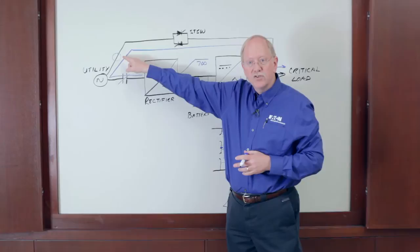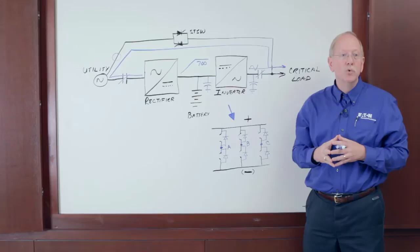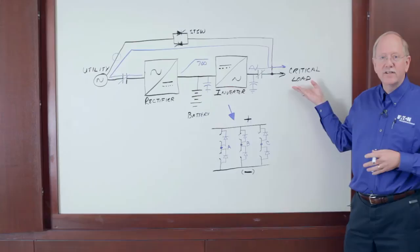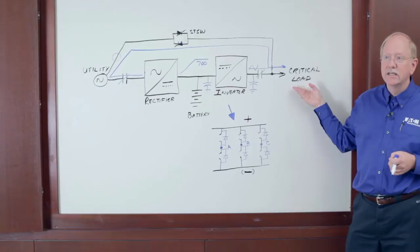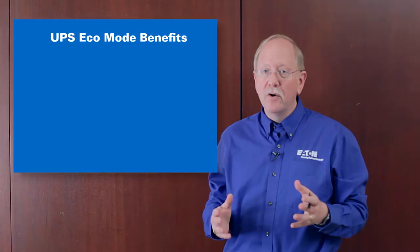So, in eco mode, I'll have power through the static switch. If the incoming power becomes disturbed, I can flash on the rectifier and the inverter, and I can do that in as little as two milliseconds, including turning off the static switch. Is that fast enough for the critical devices that we're supporting here? Well, the guidelines say any transition should be less than 20 milliseconds. The reality is, the faster the better.